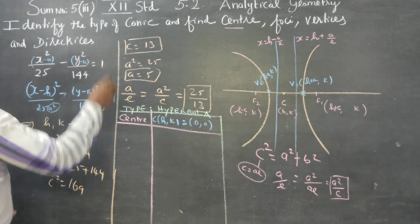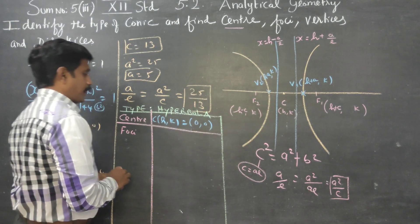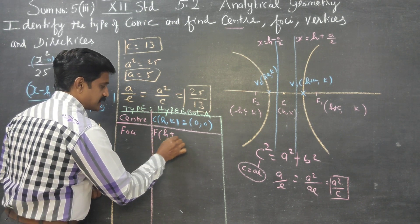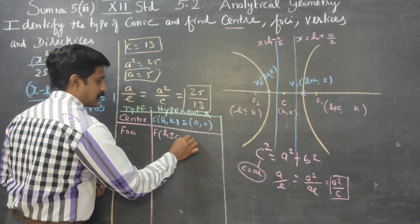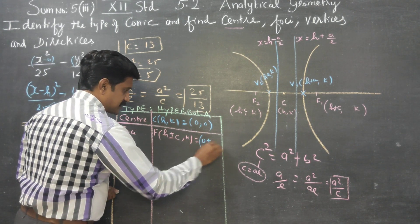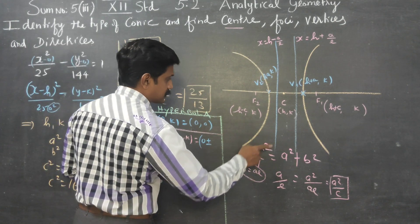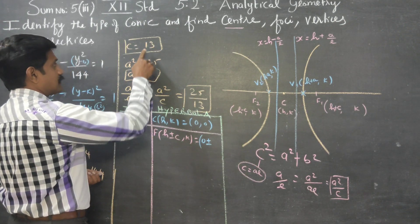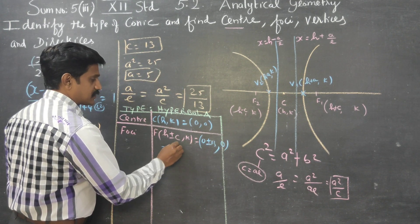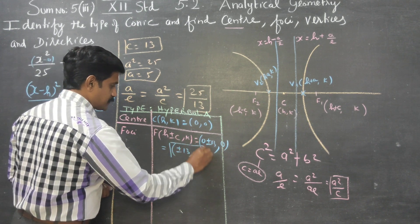After finishing the centre, coming to foci. The foci formula is (h ± c, k). Here h is 0, c is 13, and k is 0. Therefore the foci are (±13, 0).